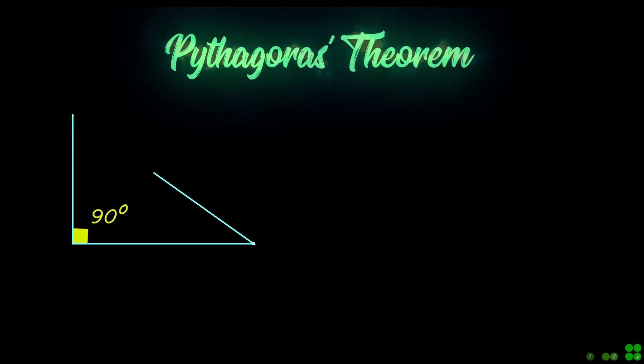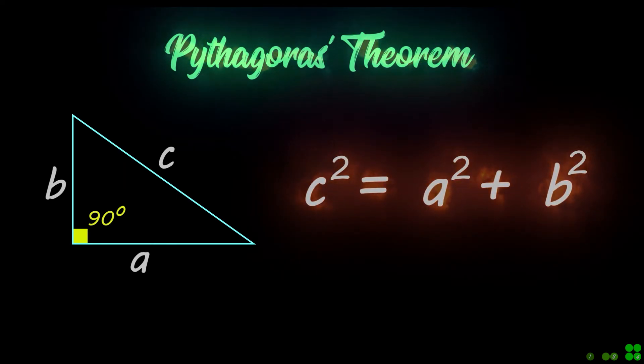The Pythagoras theorem. In a right triangle, the side lengths are related by this equation, as shown. Note, side C is opposite to the right angle.